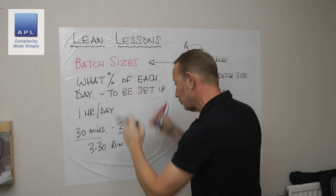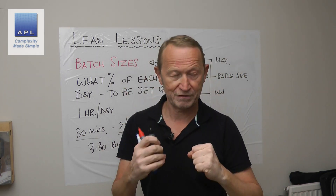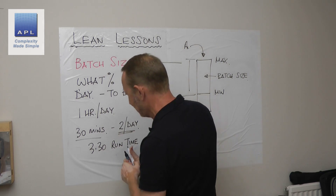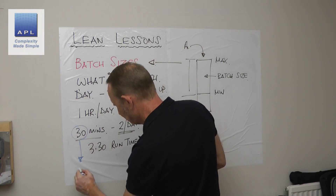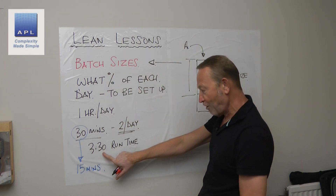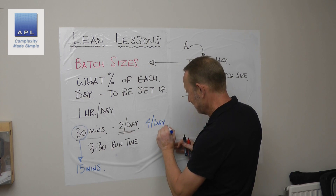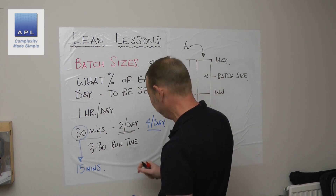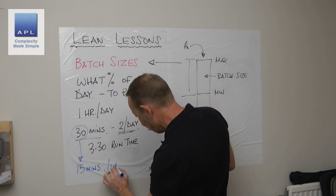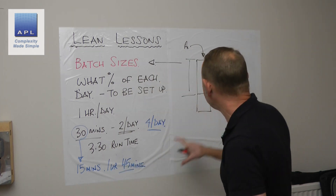You've put the space aside, you're always going to do it, you have a standard way of working it out. Now, if an engineer comes along and reduces the setup time from 30 minutes down to 15 minutes per day, what does that mean? Well, I can set up four times per day now. That means each batch run time would be one hour 45 minutes — that would be the new batch size.